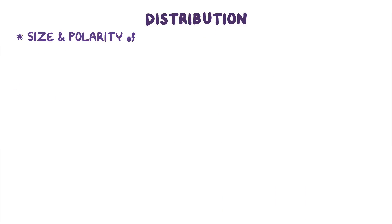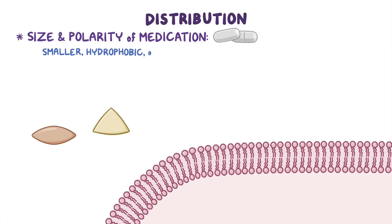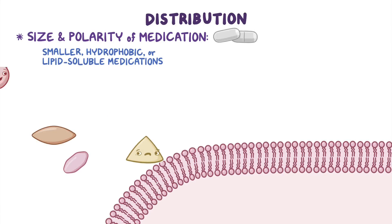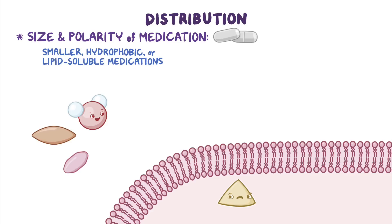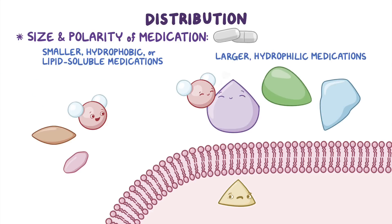Similarly, the size and polarity of a medication affects its distribution. In general, smaller, hydrophobic, or lipid-soluble medications can easily cross through the lipid bilayer cell membranes, giving them an extra edge in distribution over large, hydrophilic, or water-soluble medications.